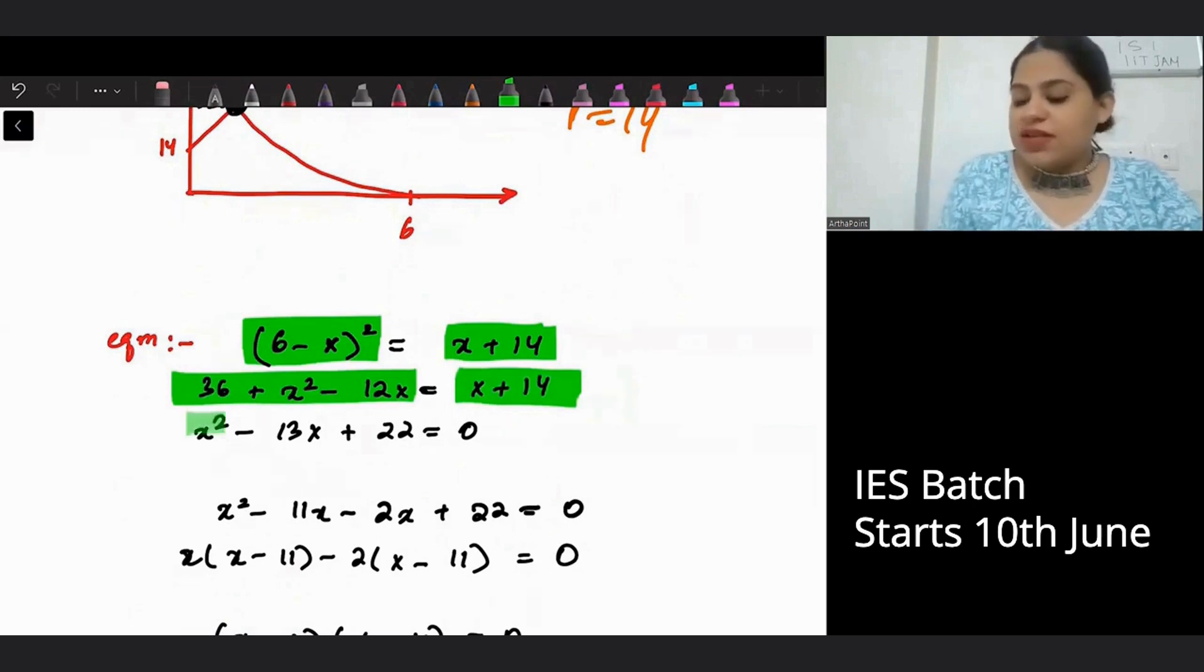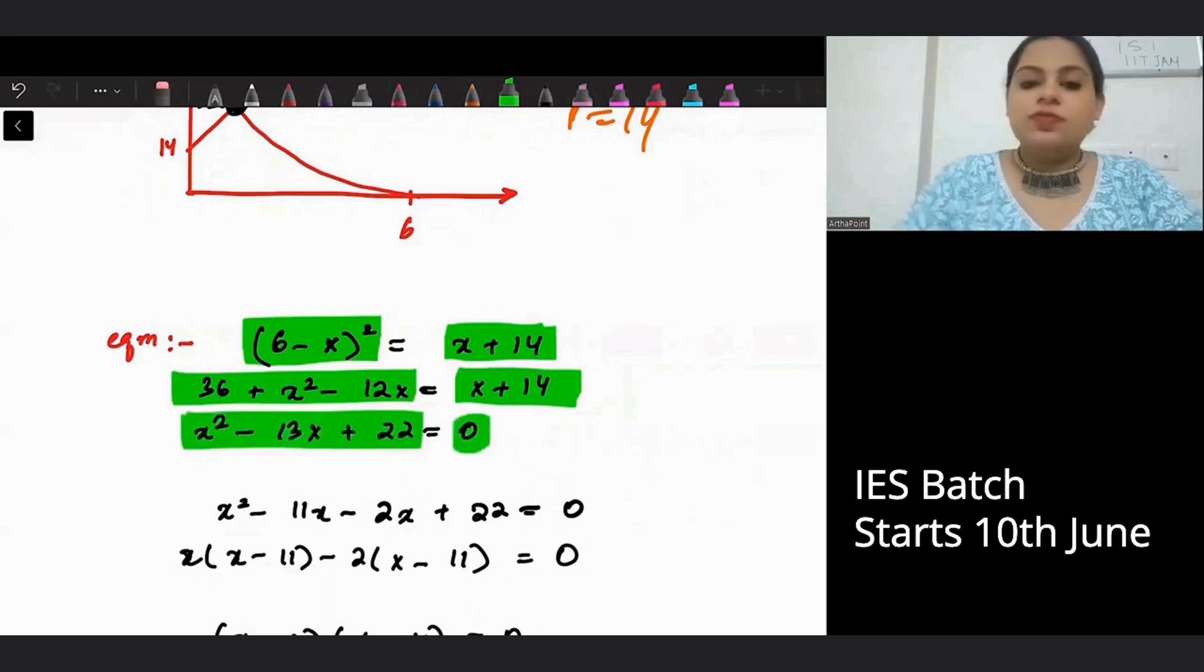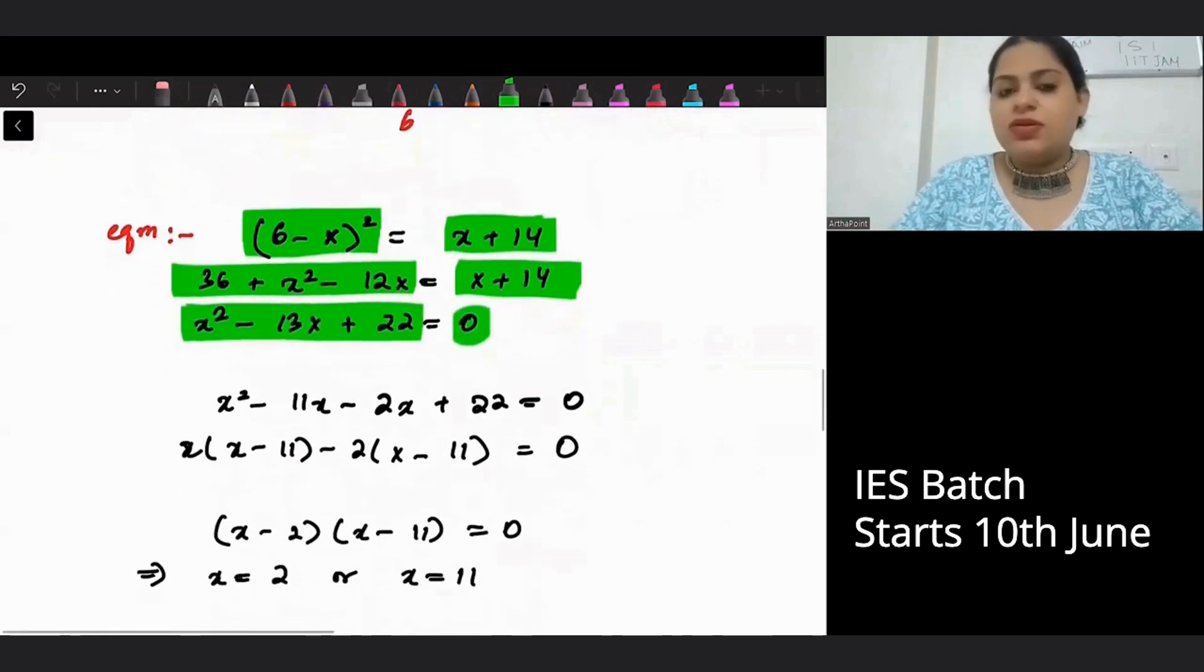Open this up. This will give you 36 plus x square minus 12x is equal to x plus 14. So this will give you x square minus 13x plus 22 is equal to 0.